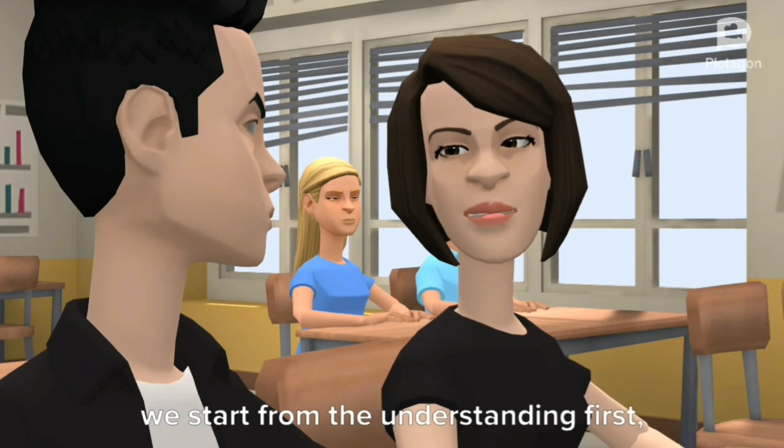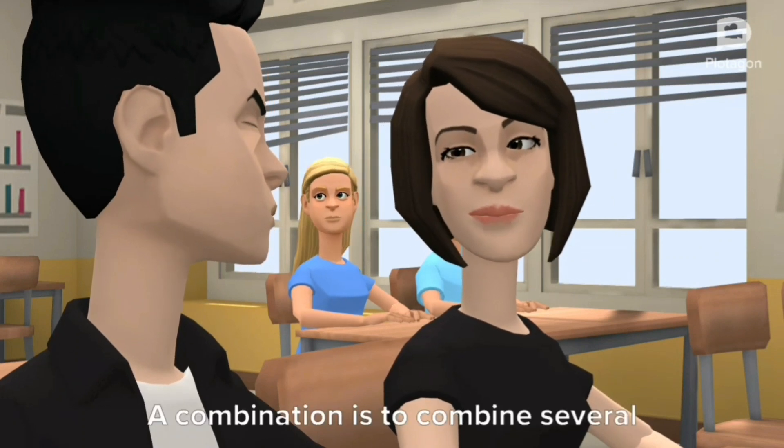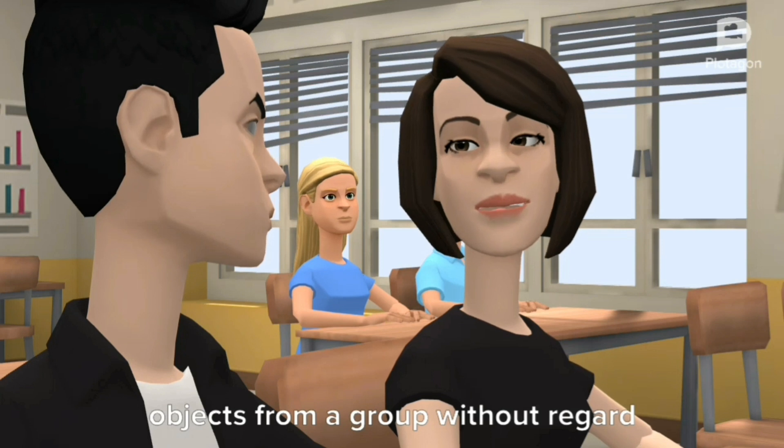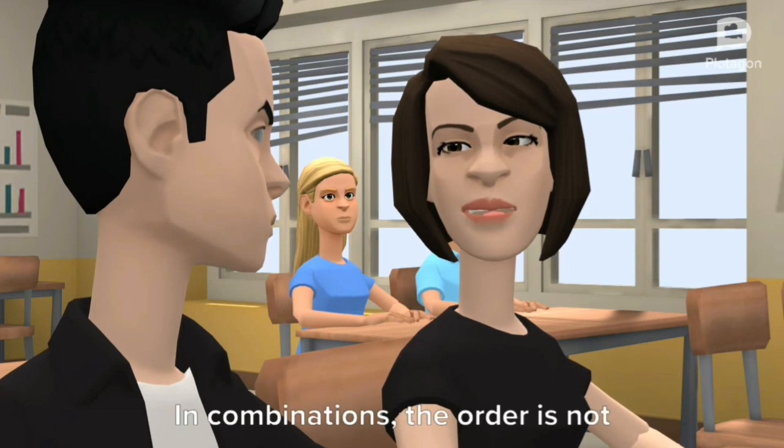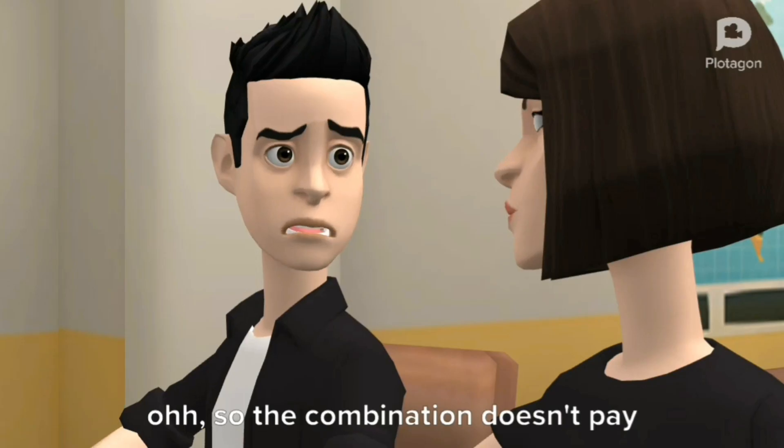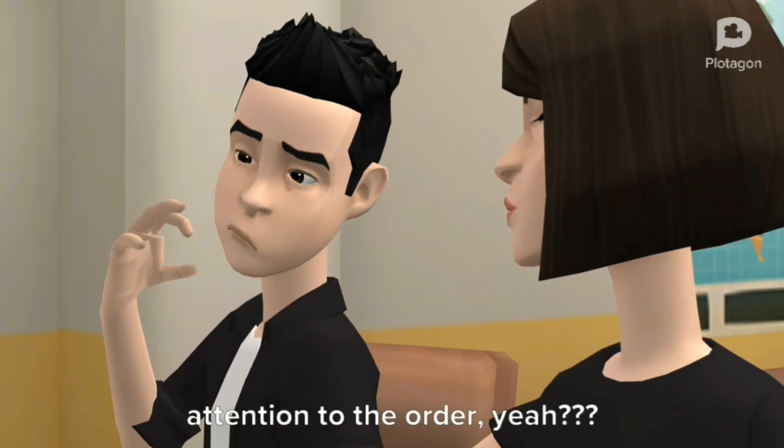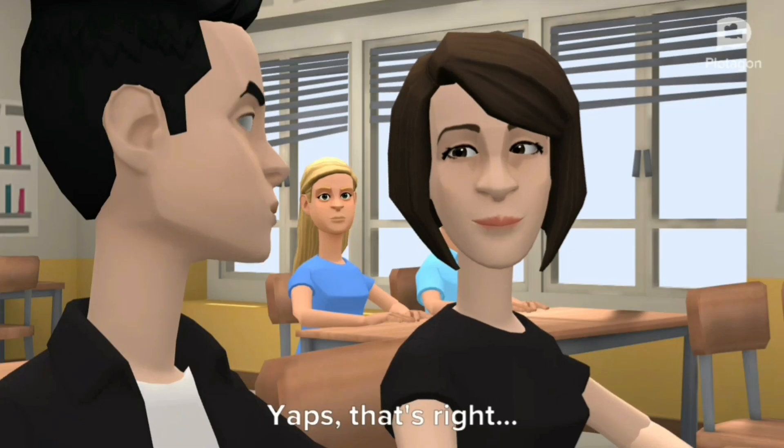We start from the understanding first. A combination is to combine several objects from a group without regard to order. In combinations, the order is not considered. Oh, so the combination doesn't pay attention to the order. Yes, that's right.